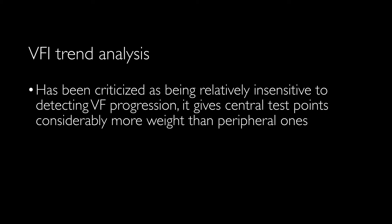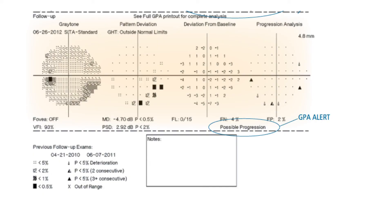In the event-based analysis section, we have gray scale, pattern deviation plot, deviation from baseline that are displayed in numbers, and progression analysis where we can see different triangles.